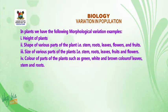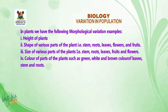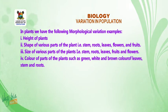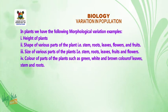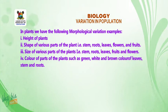In plants, we have the following morphological variation examples: 1. Height of plants. 2. Shape of various parts of the plants, that is, stem, roots, leaves, flowers, and fruits. 3. Size of various parts of the plants, that is, stem, roots, leaves, fruits, and flowers. 4. Color of parts of the plants, such as green, white, and brown color of leaves, stems, and roots.